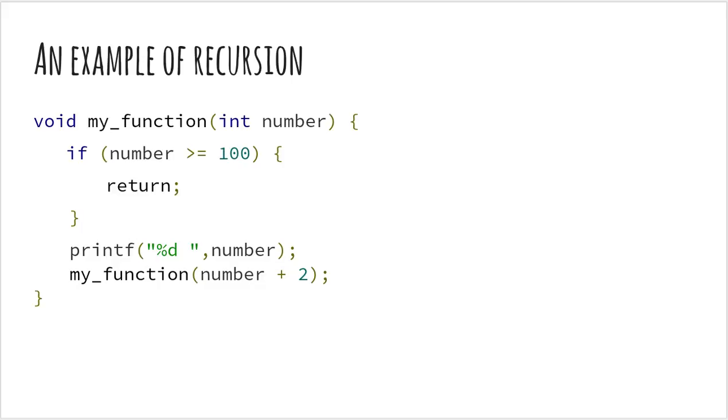Now if your number is greater than hundred, you return. So if the number you supplied in the first place is greater than hundred, then you will not get anything. If the number supplied is less, then you print the number and you call the function again on the number plus two. Thus, what you will get as an argument to the function will now be your original number plus two.